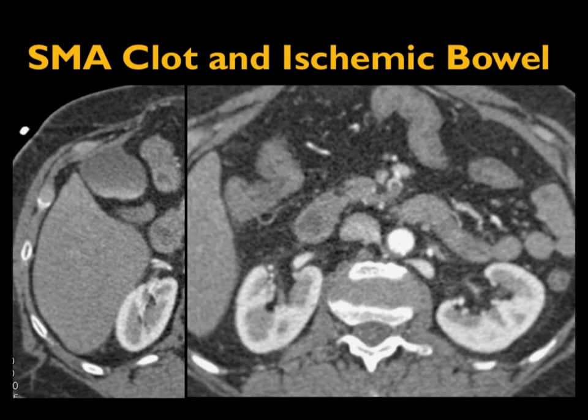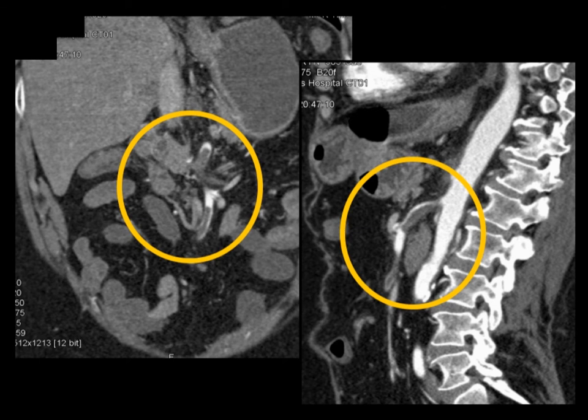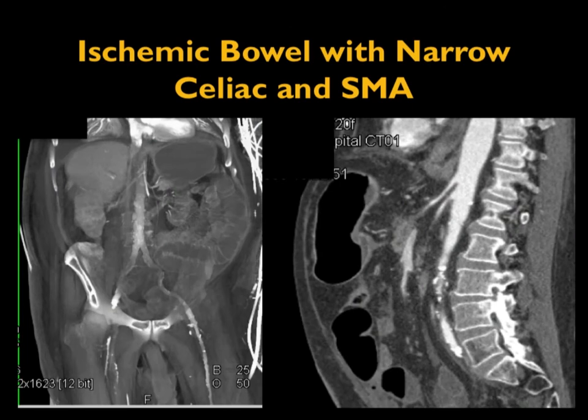Here is a very subtle thrombus in the proximal SMA. You can see it better and appreciate its extent on the sagittal views. You see the thickened, ischemic bowel. Sometimes it's not so much the narrowing but the caliber. Look at the caliber of celiac and SMA — like little thin lines. You know this patient has decreased flow: ischemic bowel due to a low flow state. The bowel is dilated, there's poor perfusion, and the mesenteric vessels — celiac and SMA — have all clamped down.